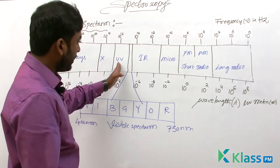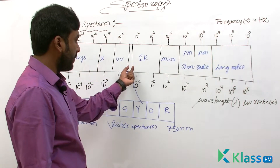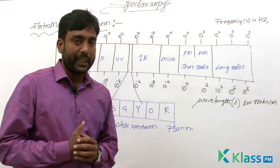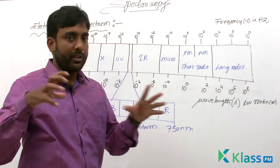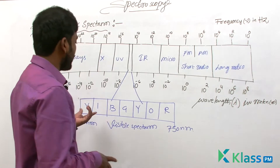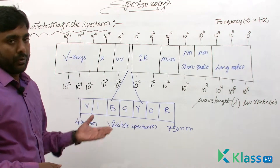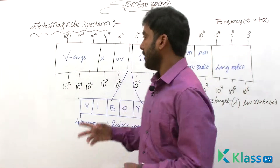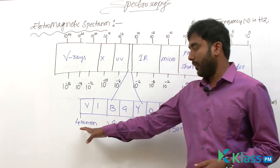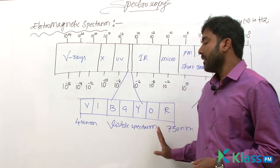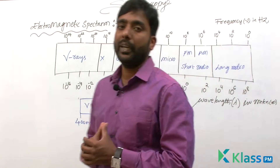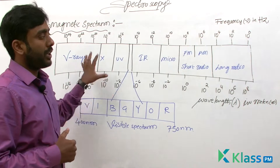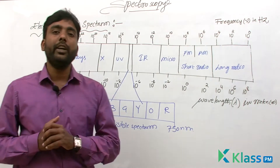Between UV and infrared we get our visible spectrum, which we are able to see with our naked eyes — that is the visible light. It is a combination of 7 colors: VIBGYOR — violet, indigo, blue, green, yellow, orange, red. It is present with the wavelength of 400 nanometers to 750 or 800 nanometers.